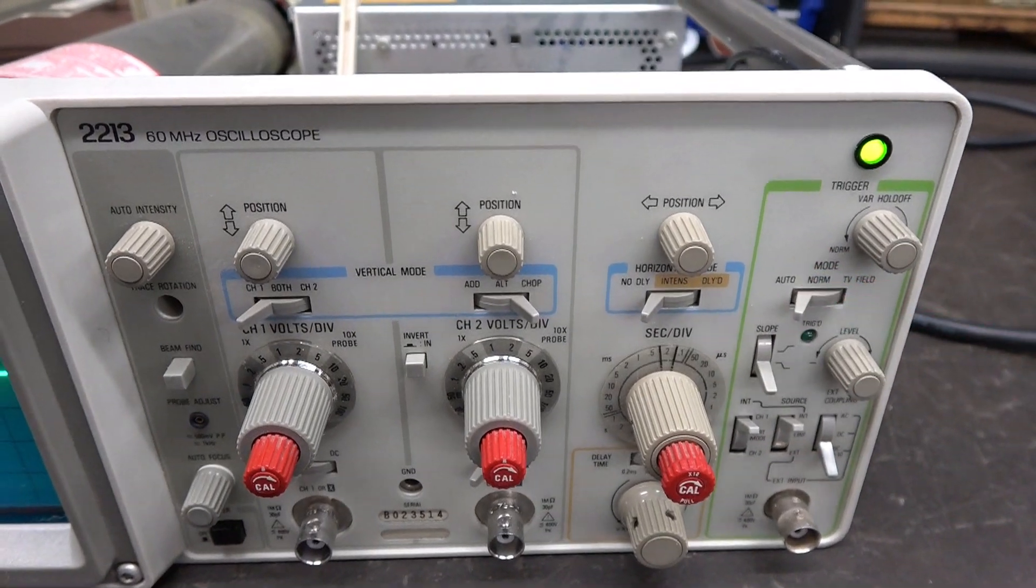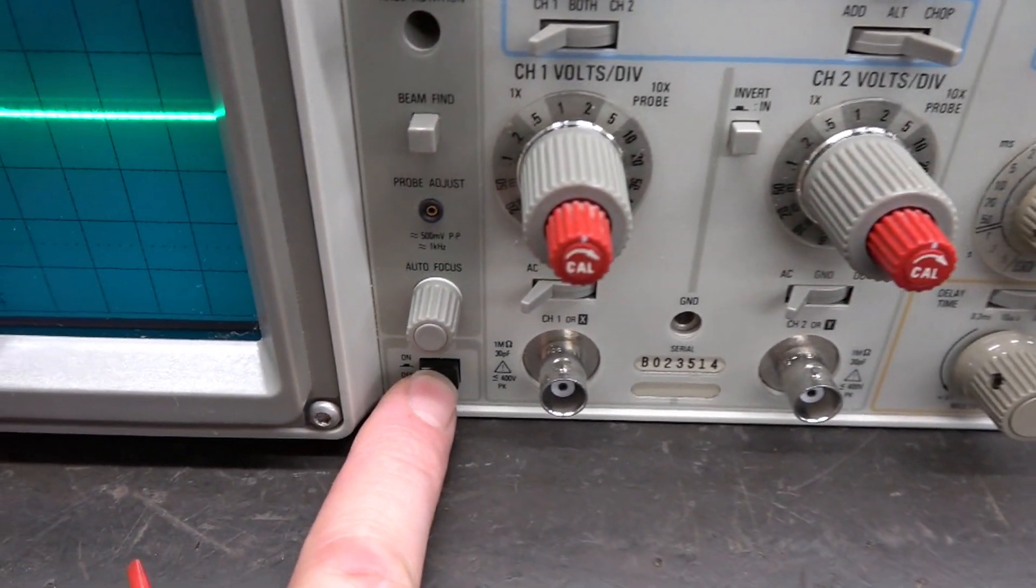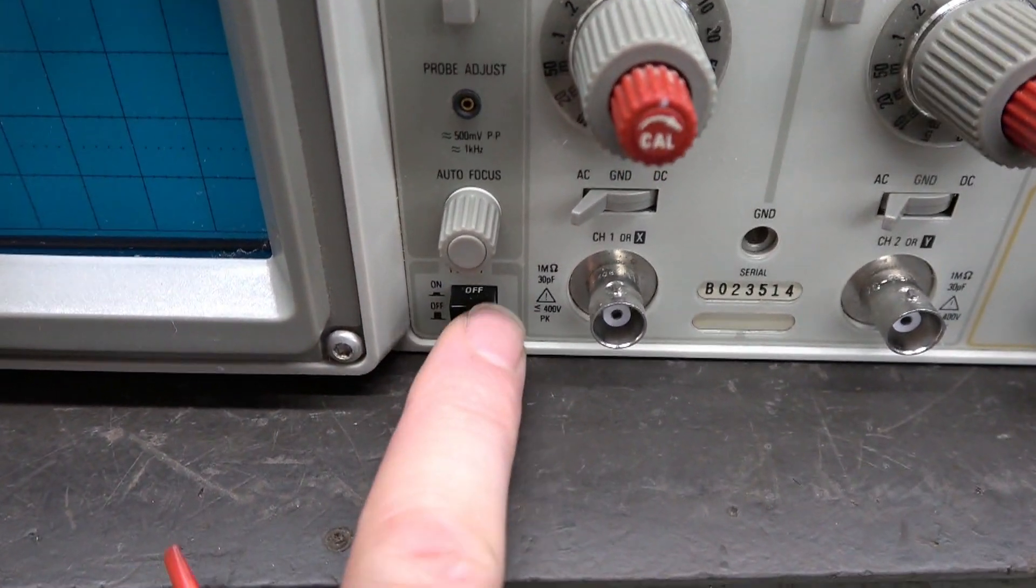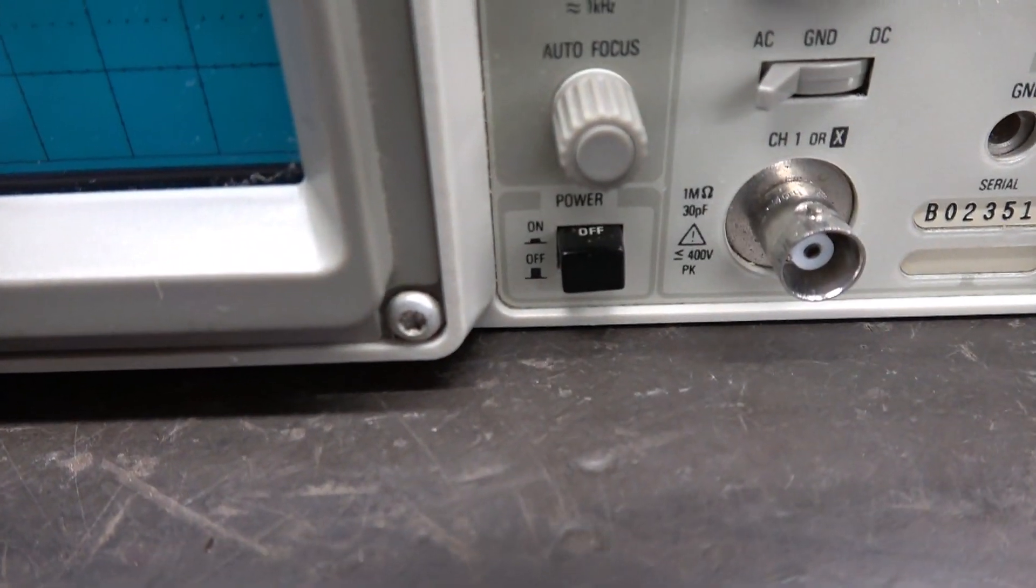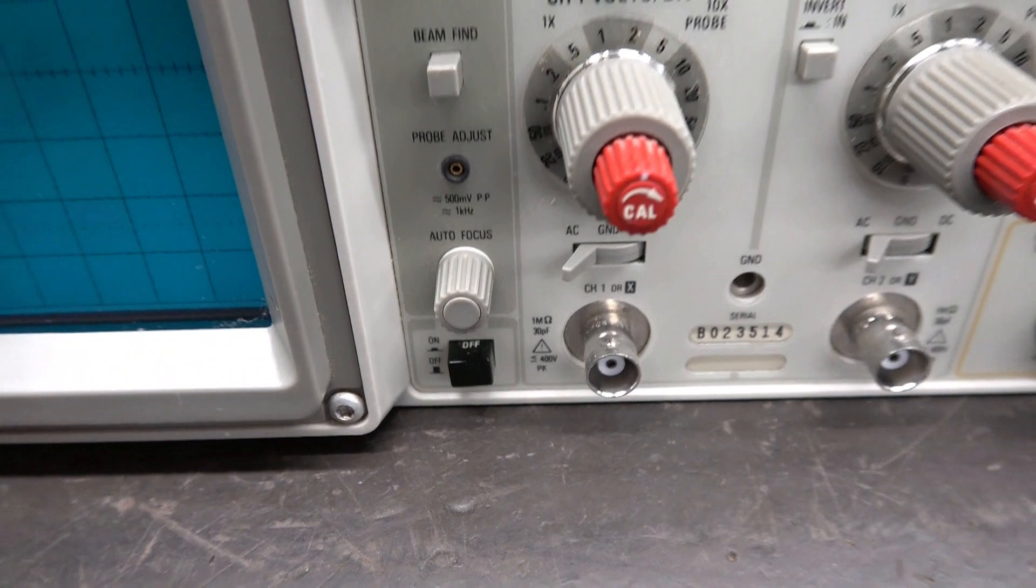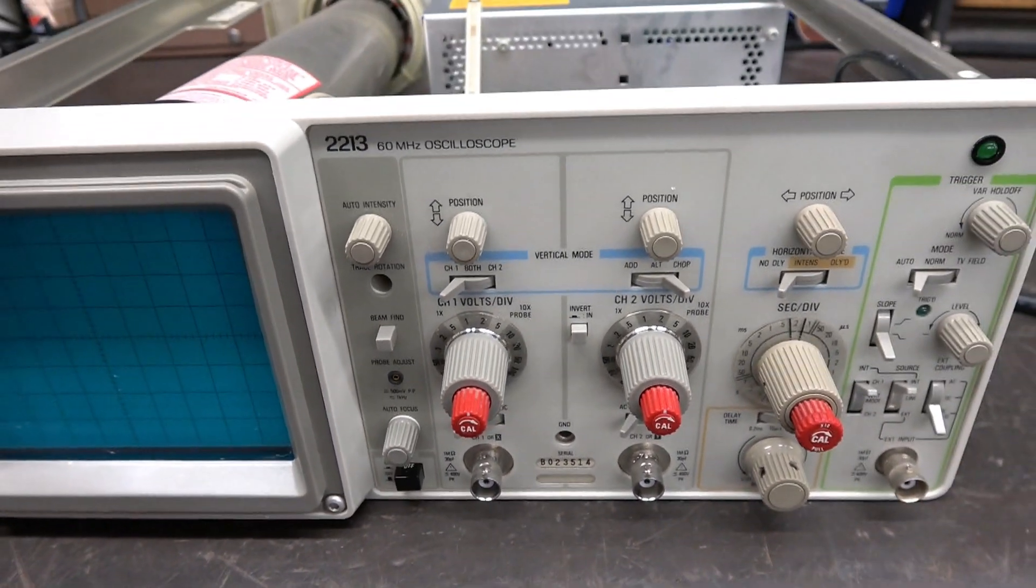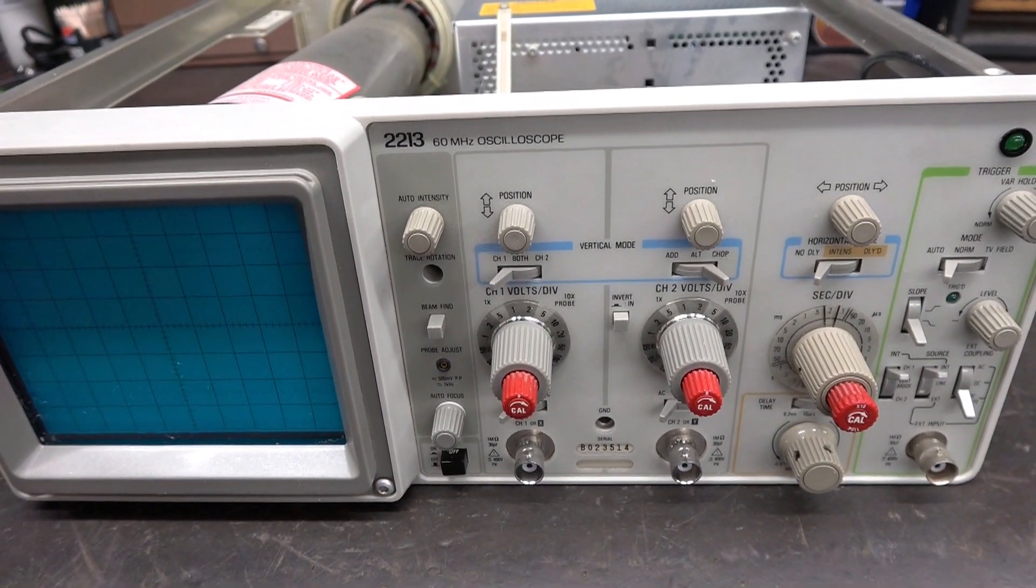So without the power LED, you have to rely on the nomenclature on top of that switch that says off. Couldn't deal with that. So now I've got a power light on my 2213.